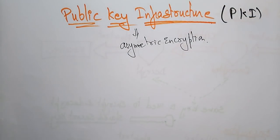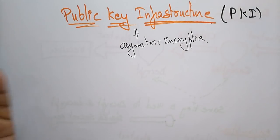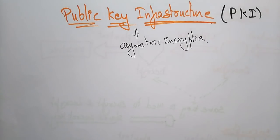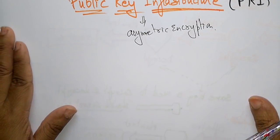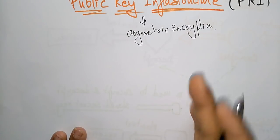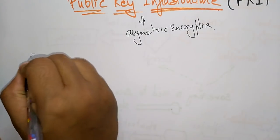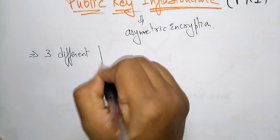In asymmetric encryption, two different keys are used. In public key infrastructure, one is the private key and the other is the public key. The receiver uses their private key to decrypt. PKI is also referred to as asymmetric encryption. There are three different formats of messages that can be used in public key cryptosystems.